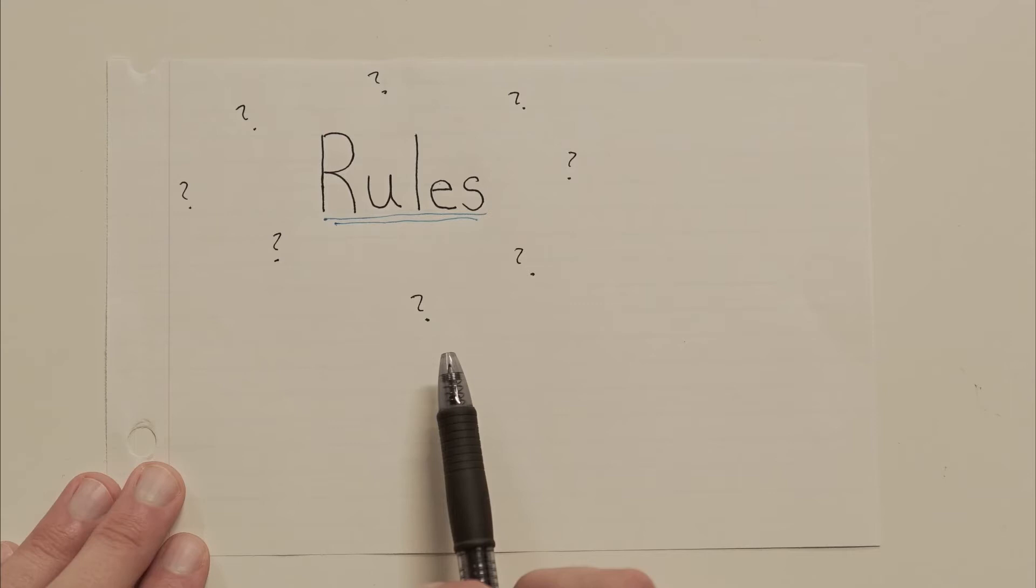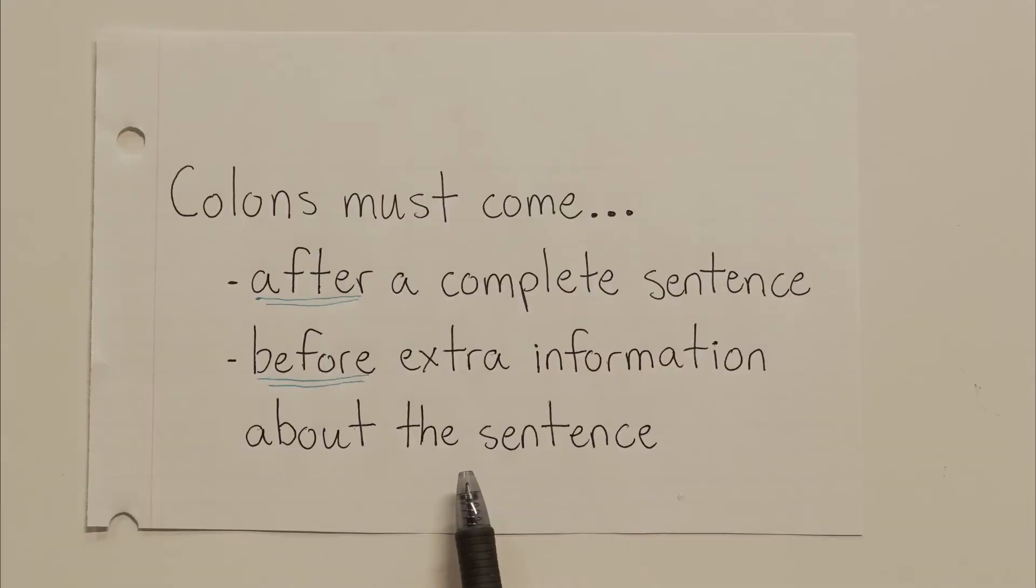So just like the semicolon, the colon might seem intimidating, but if you remember just a few rules, it's actually pretty easy to use. So in professional and academic writing, here's how it works. Colons must come after a full sentence and before some extra information about that sentence. So what exactly do I mean by extra information? Well, let's take a look at an example.